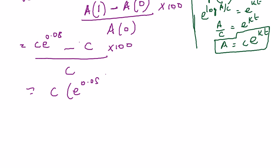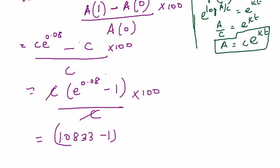And they would have already given you in the sum that e^(0.08) is 1.0833 minus 1 into hundred. So that becomes 0.0833 into 100, which is nothing but 8.33. So the percentage increase at the end of one year is 8.33%.